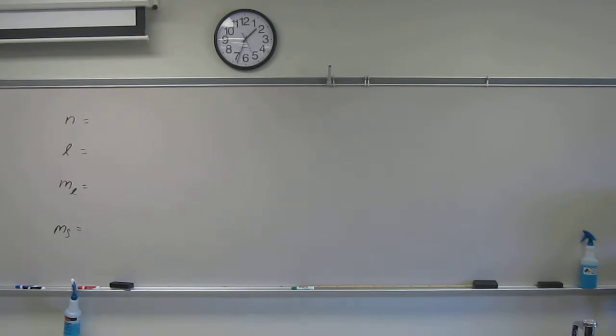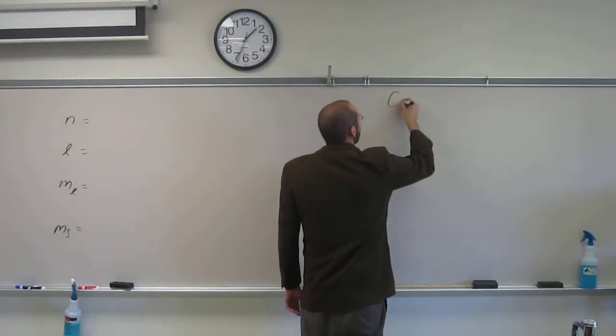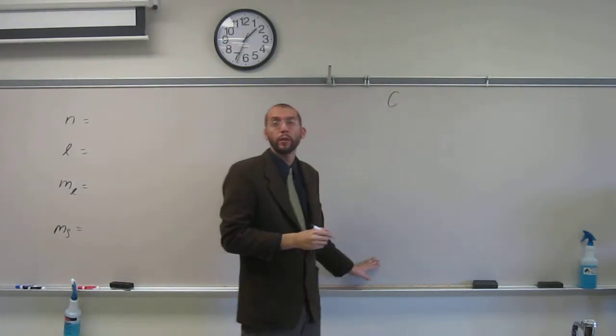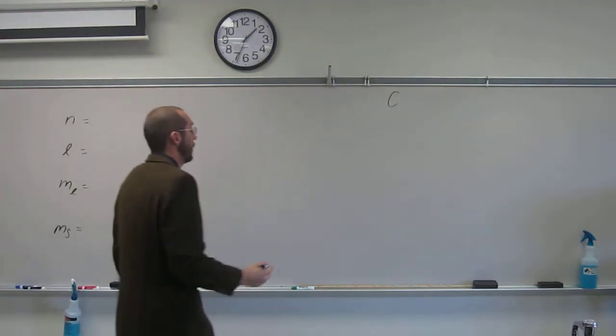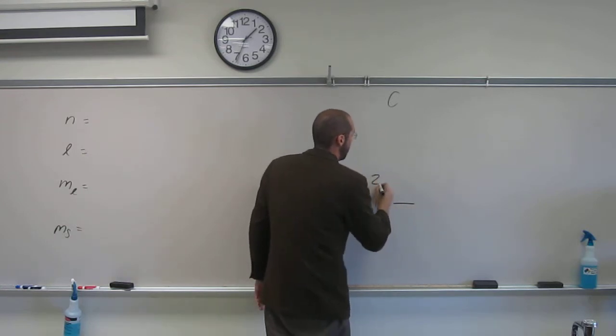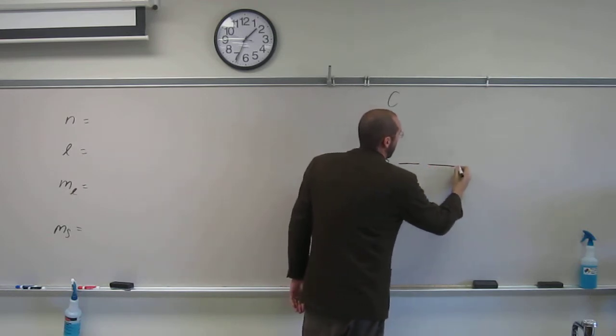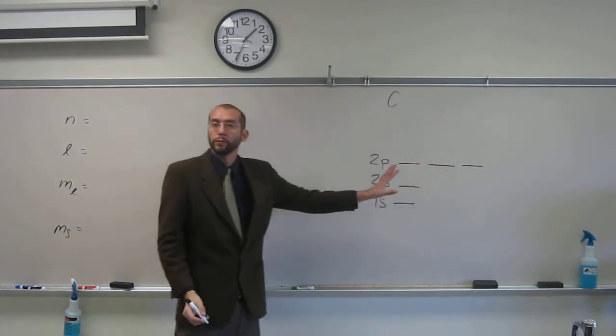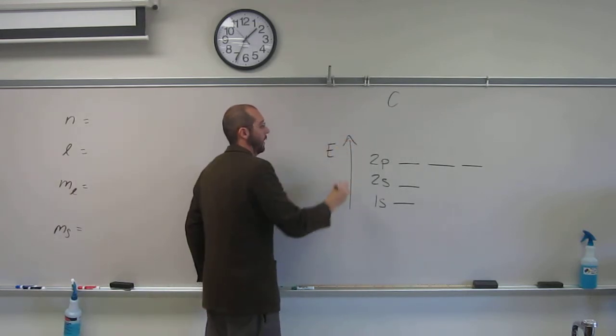So the thing I like to do first when I'm doing this is to say we've got carbon, and then I'm going to draw its electron diagram. So 1s, 2s, 2p, like that. Energy increasing there.